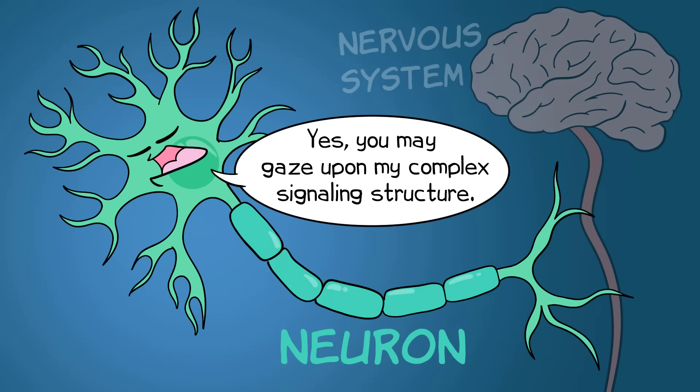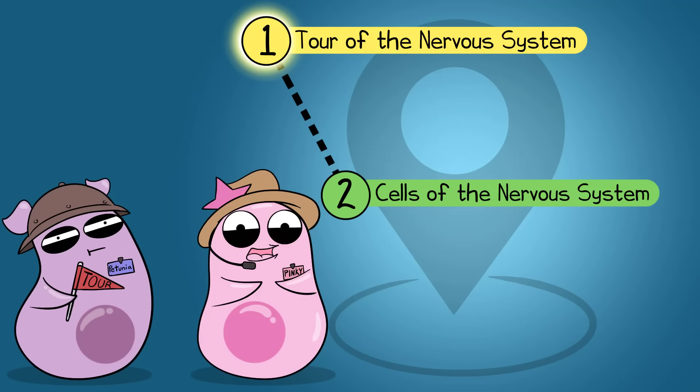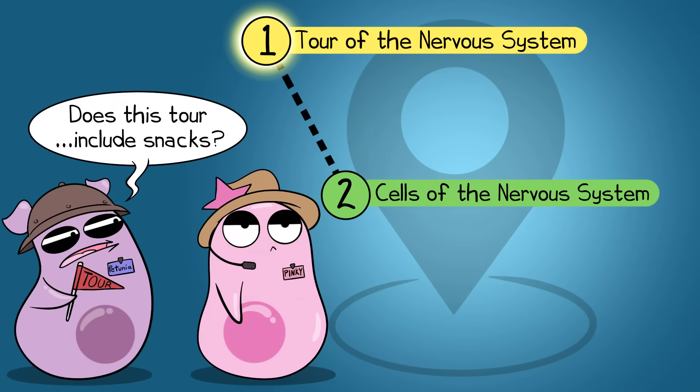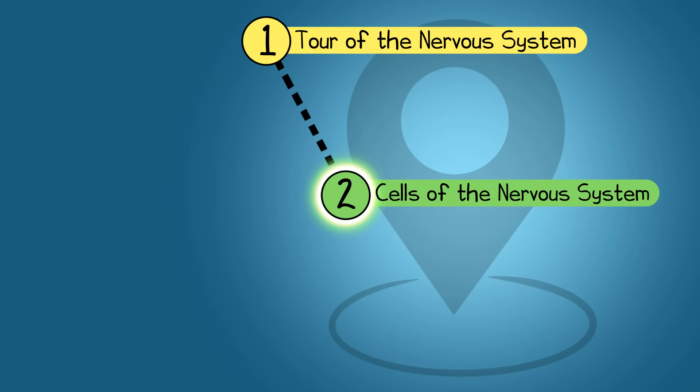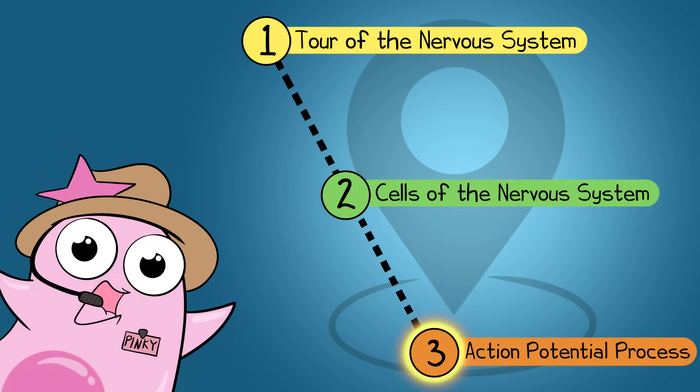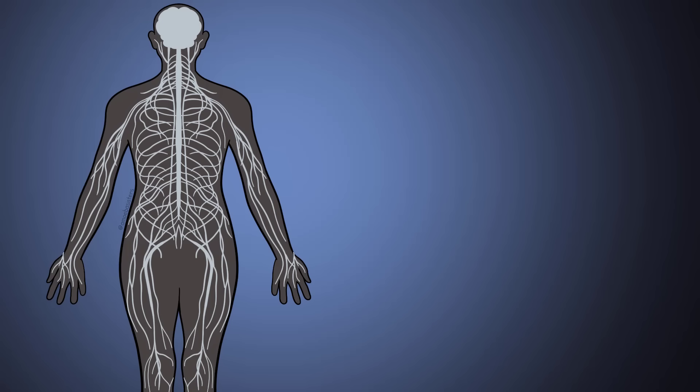If I had to pick my favorite specialized body cell, it would be a neuron — a cell that is part of the nervous system, the topic of this video. Before we talk about neurons or other cells in the nervous system, let's give a general tour. Then we'll get to the cells and briefly mention the action potential. Structure-wise, you can divide the nervous system into two very general regions.